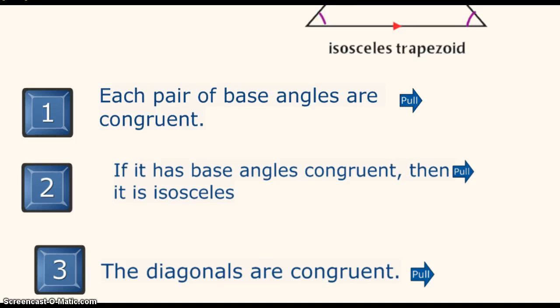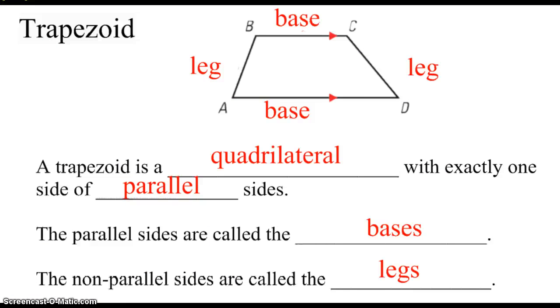And the third thing is the diagonals in any isosceles triangle are also congruent. Now, that has nothing to do with a regular trapezoid. None of these are true. But if it has isosceles, this is true. So you have to know those three properties distinct to isosceles, and you have to know these properties which are true to a trapezoid.